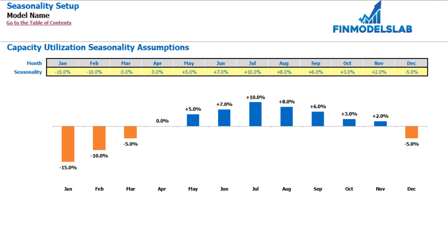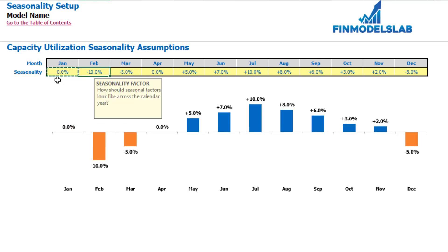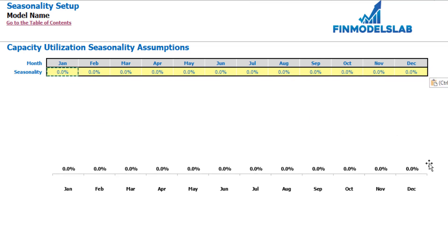On the seasonality tab you can set up your capacity utilization seasonality assumptions across the months. The dashboard previously set up the average capacity utilization by years, and here you may adjust it for different months. For example, minus 10% means that if you have 50% average capacity utilization, you multiply by 0.9 and get 45% for February. Plus 10% in July means you multiply 50% by 1.1 to get 55%. If you don't need seasonality, just put zero across all months.